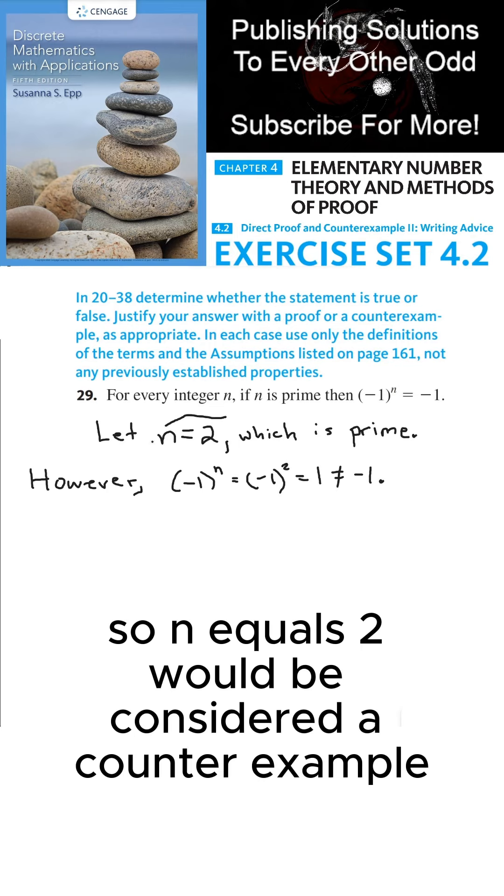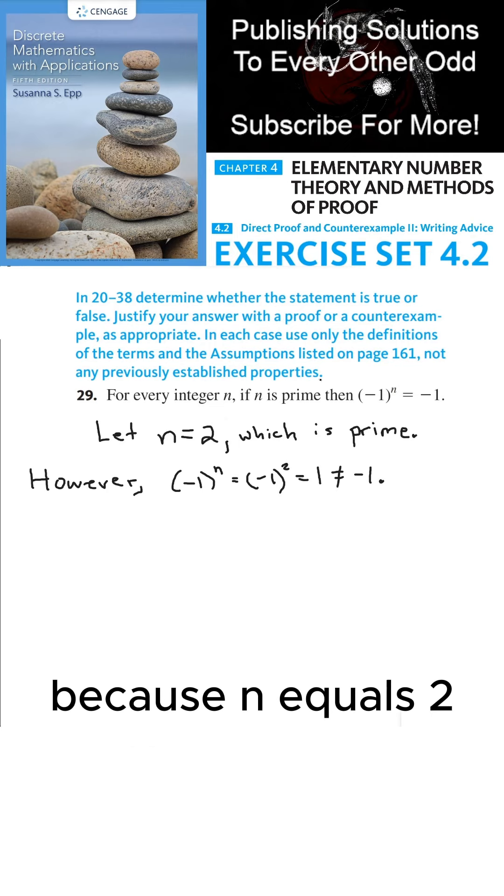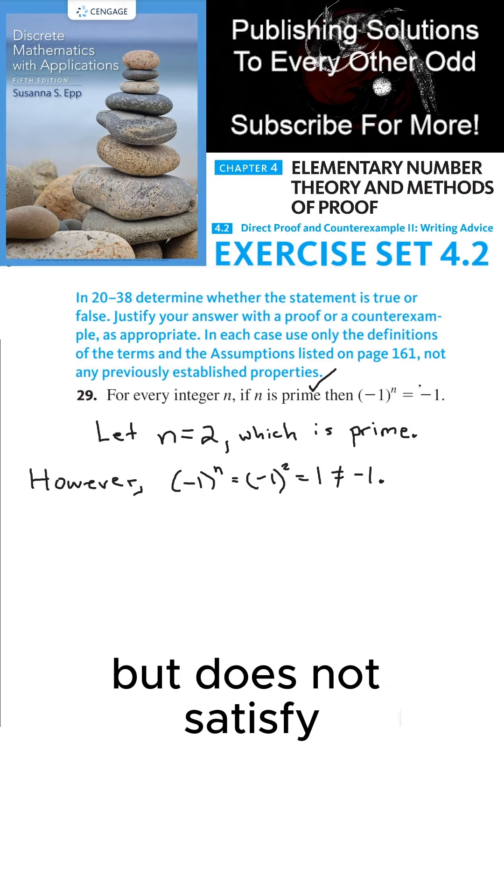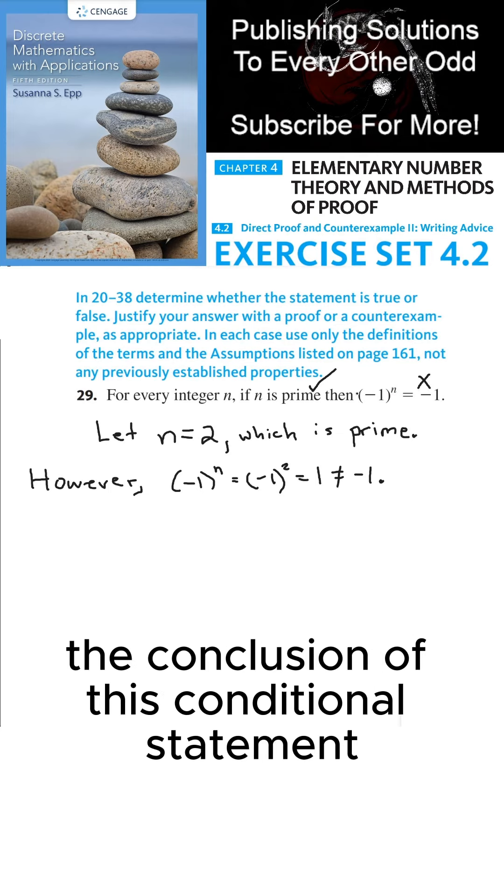So n = 2 would be considered a counterexample because n = 2 satisfies the premise of this conditional statement, but does not satisfy the conclusion of this conditional statement.